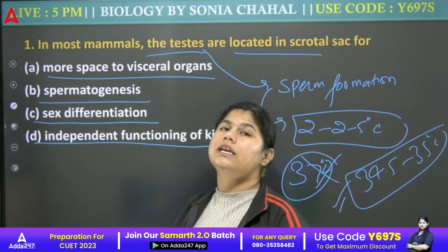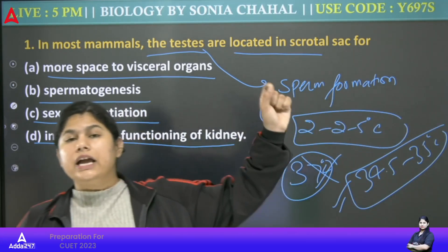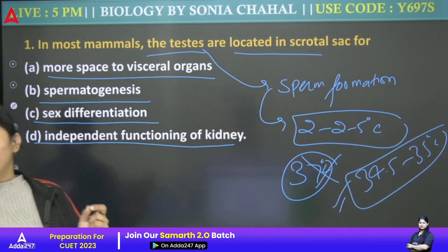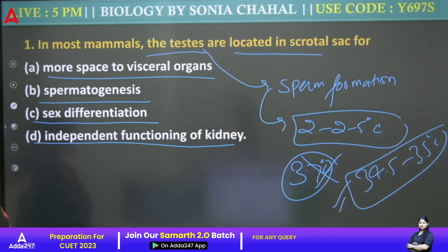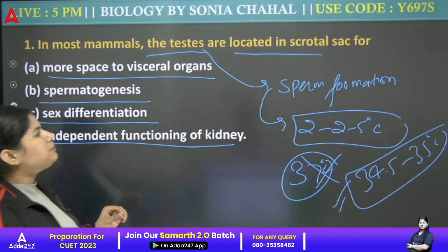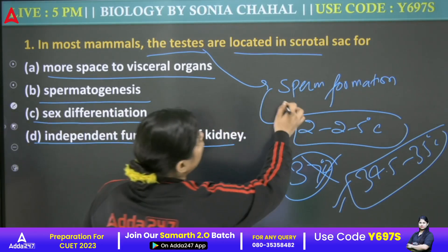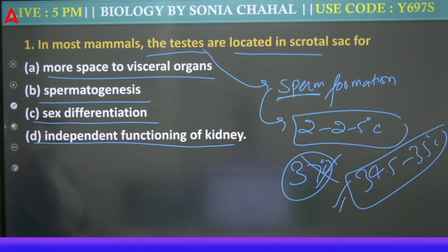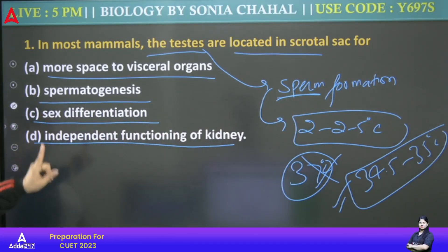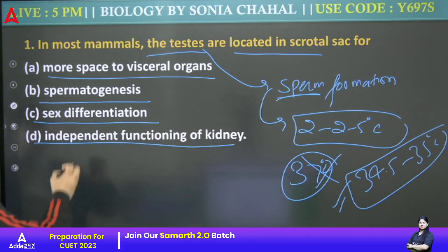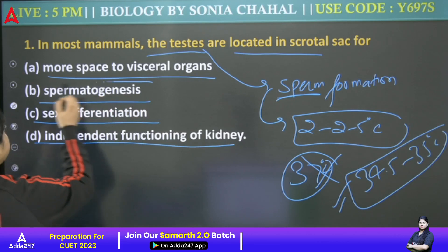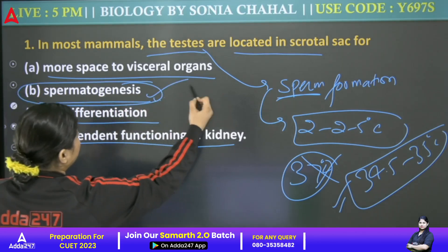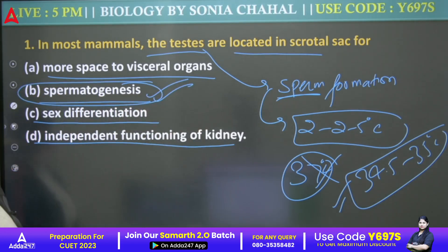The scrotal sac is located outside the body. If you have sperm formation — what will the answer be here? Spermatogenesis. The answer is spermatogenesis. Sperm formation is the reason.